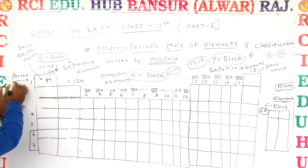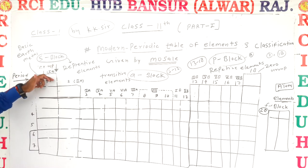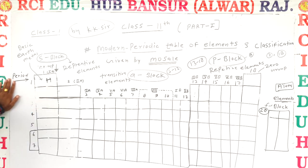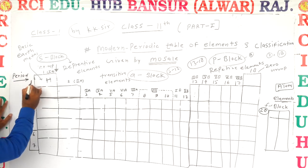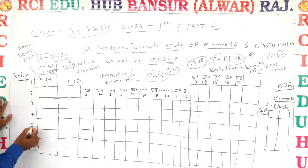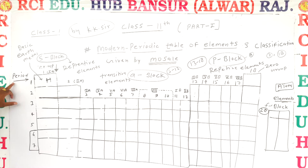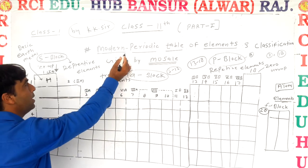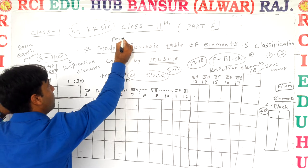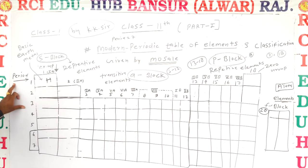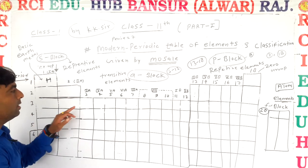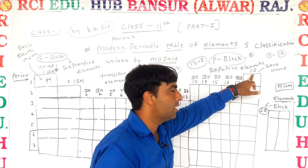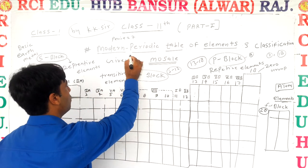In this representation, you can see there are horizontal lines and vertical lines. The vertical part is called a group and the horizontal part is called a period. In the modern periodic table, the period number equals seven — one, two, three, four, five, six, seven — and the group number equals eighteen.